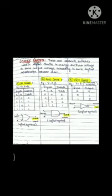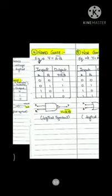The truth table and the logical symbol for the AND gate are shown. Third comes the NOT gate. Y equals A-bar, where A-bar indicates the inversion. The truth table and the logical symbol for the NOT gate are shown.